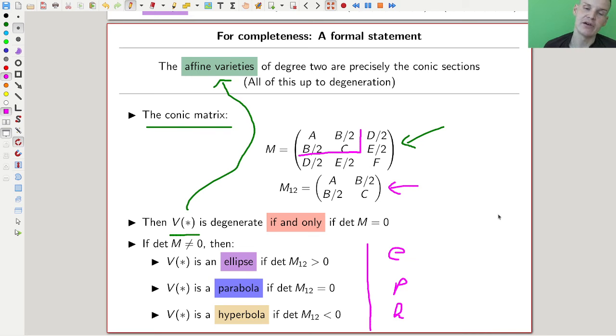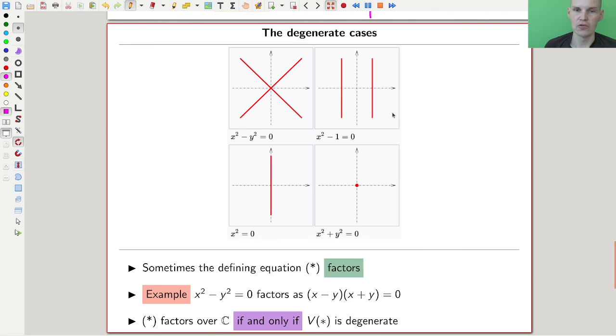And you just have our favorite three cases, the ellipse, the parabola, and the hyperbola, depending on what the determinant of that little upper case is. So if the determinant is positive, you have an ellipse. If the determinant is zero, you have a parabola. And if the determinant is negative, you have a hyperbola. And this gives a complete classification of conic sections in terms of algebraic geometry. And I feel like this is a really nice solution. And in some sense, everything that is happening in algebraic geometry is some generalization of this.